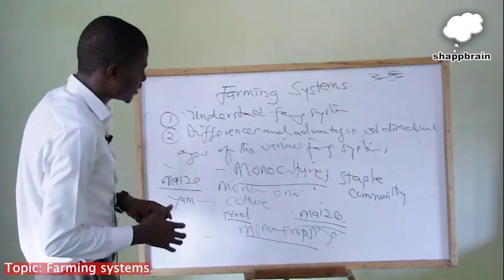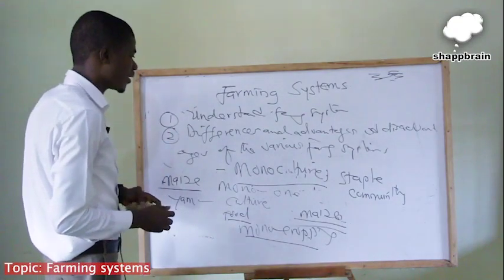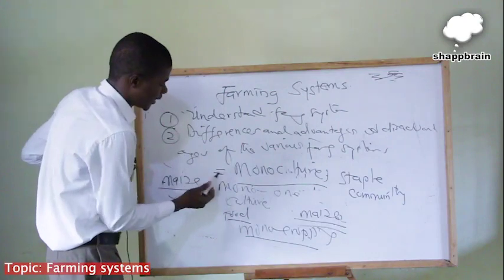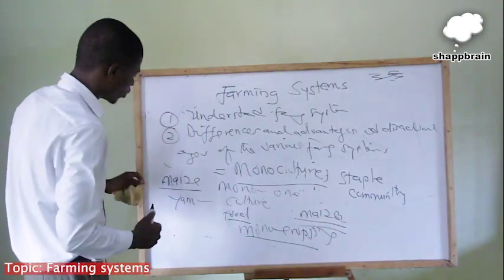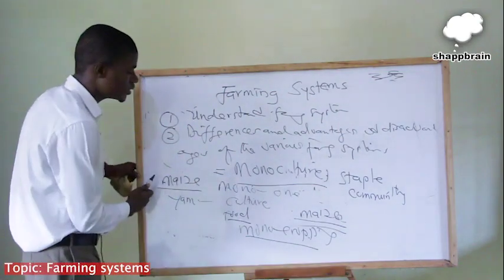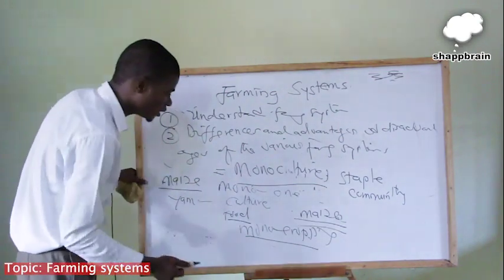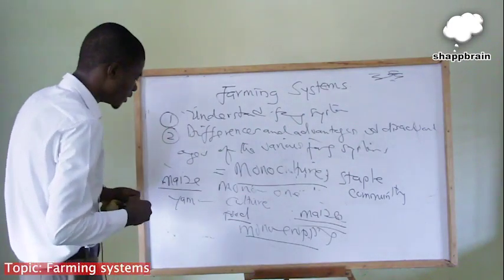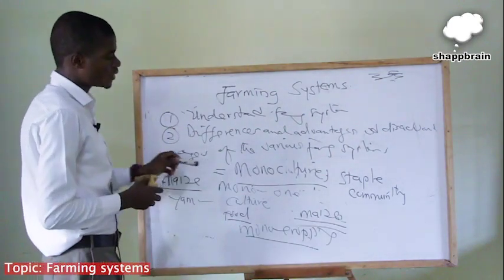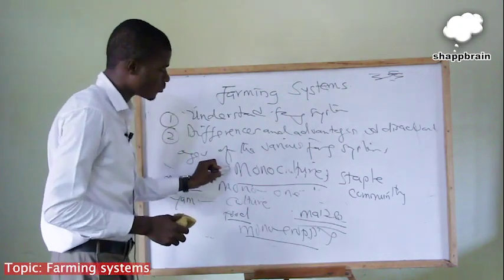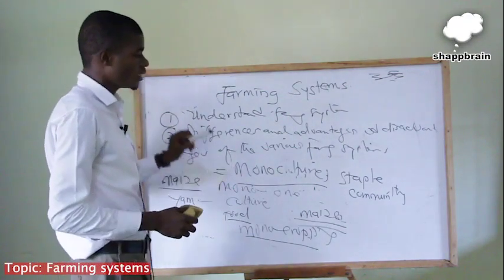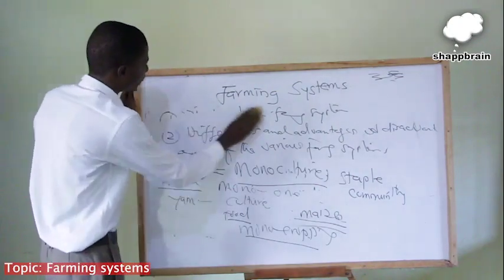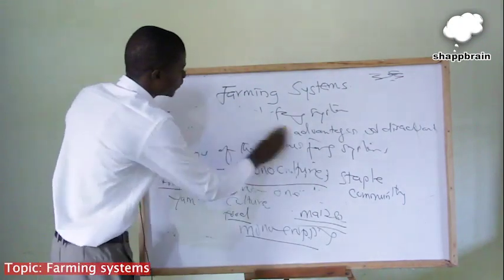If a particular pest attacks a particular food crop like maize, the farmer can decide to change the food crop so as to reduce the presence of that pest. But if the farmer continues with monoculture, then the pests might destroy the farm crops.